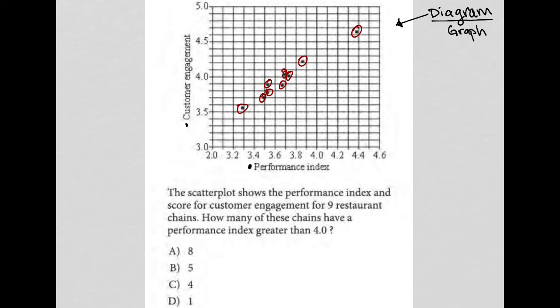How many of these chains have a performance index greater than four? So performance index at four, let's just erase all this for right now, a performance index at four is right here. I can just draw this vertical line straight up.